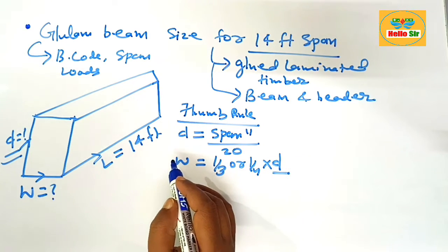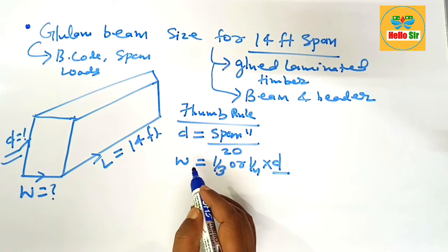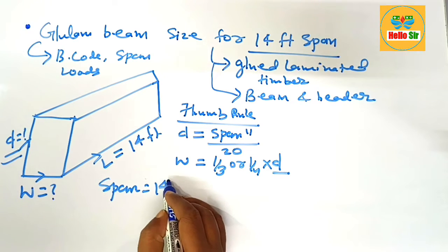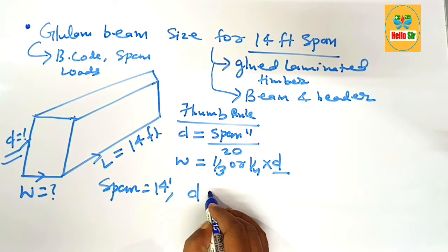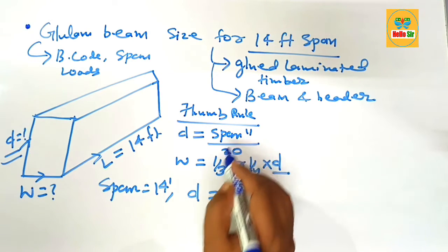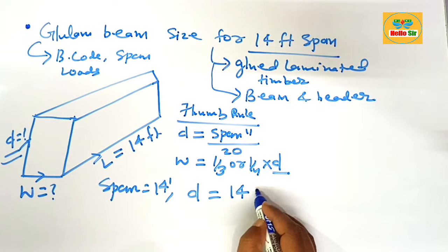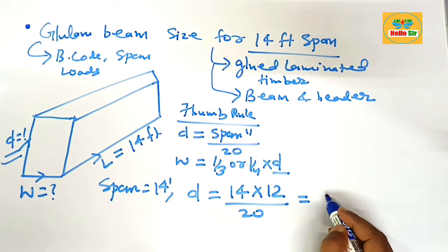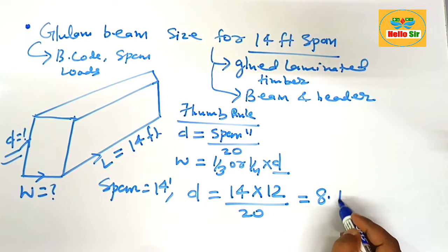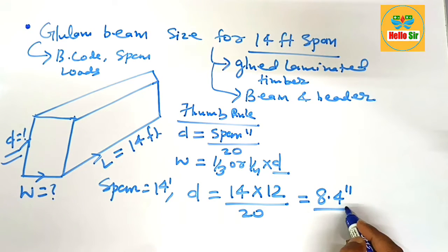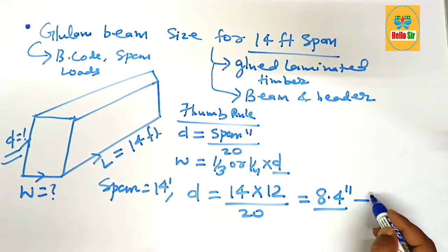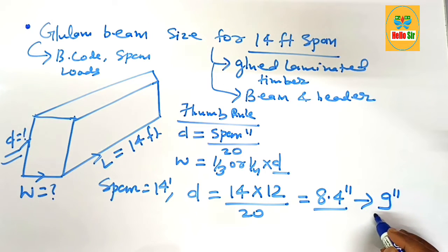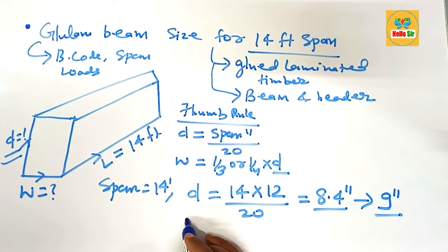For a 14-foot span, the depth should be the span in inches — that is 14 × 12 = 168 inches — divided by 20. This comes out to about 8.4 inches, so the nominal size of the depth should be 9 inches.